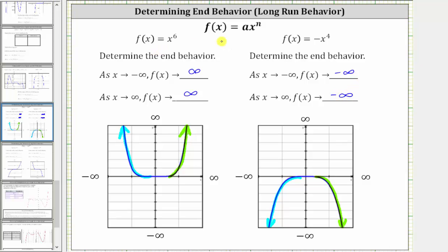Notice that for both of these power functions, the degrees are even. For f(x) = x⁶, the coefficient a is positive. For f(x) = -x⁴, a is negative. Whenever we have a power function with an even degree and a is positive, this will always be the end behavior. When the degree is even and a is negative, this will always be the end behavior.